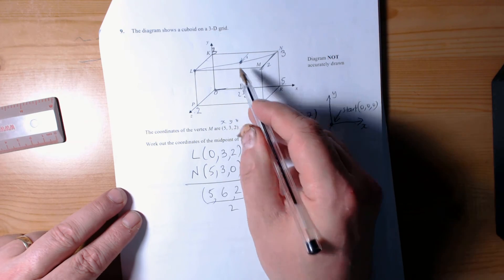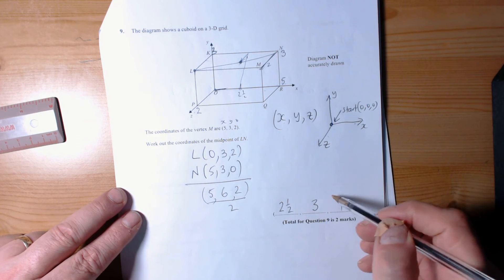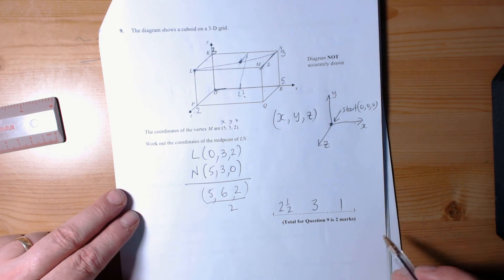Again, lots of different ways of doing that to get (2.5, 3, 1).